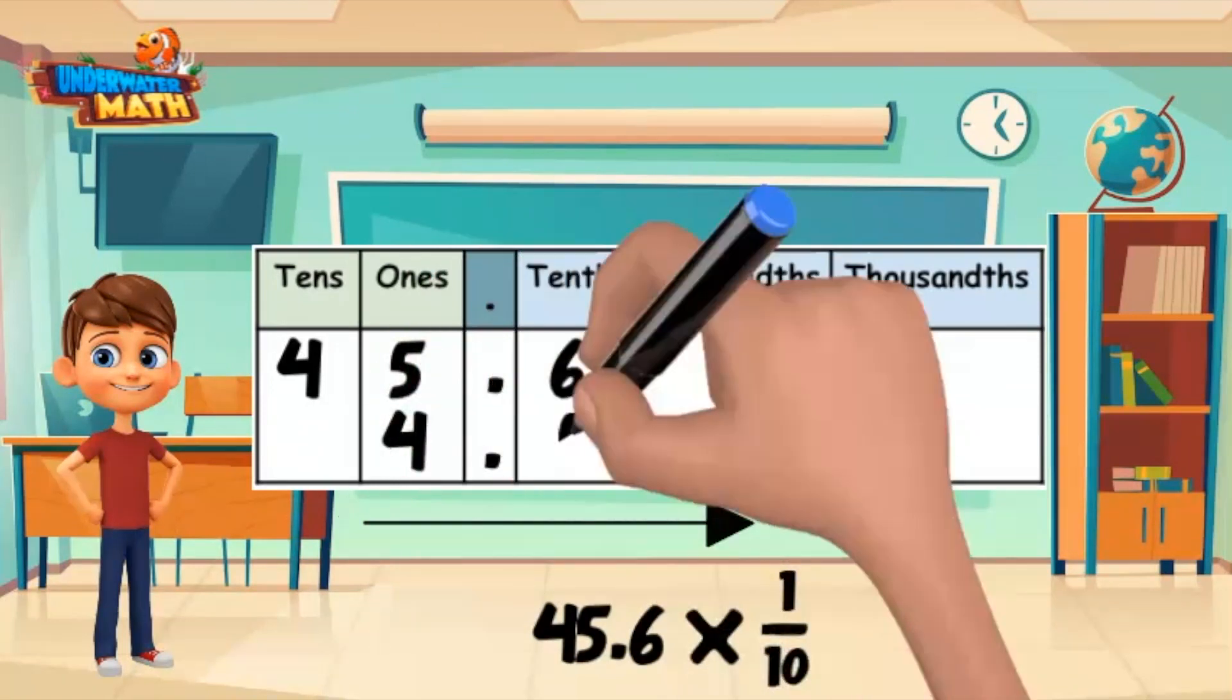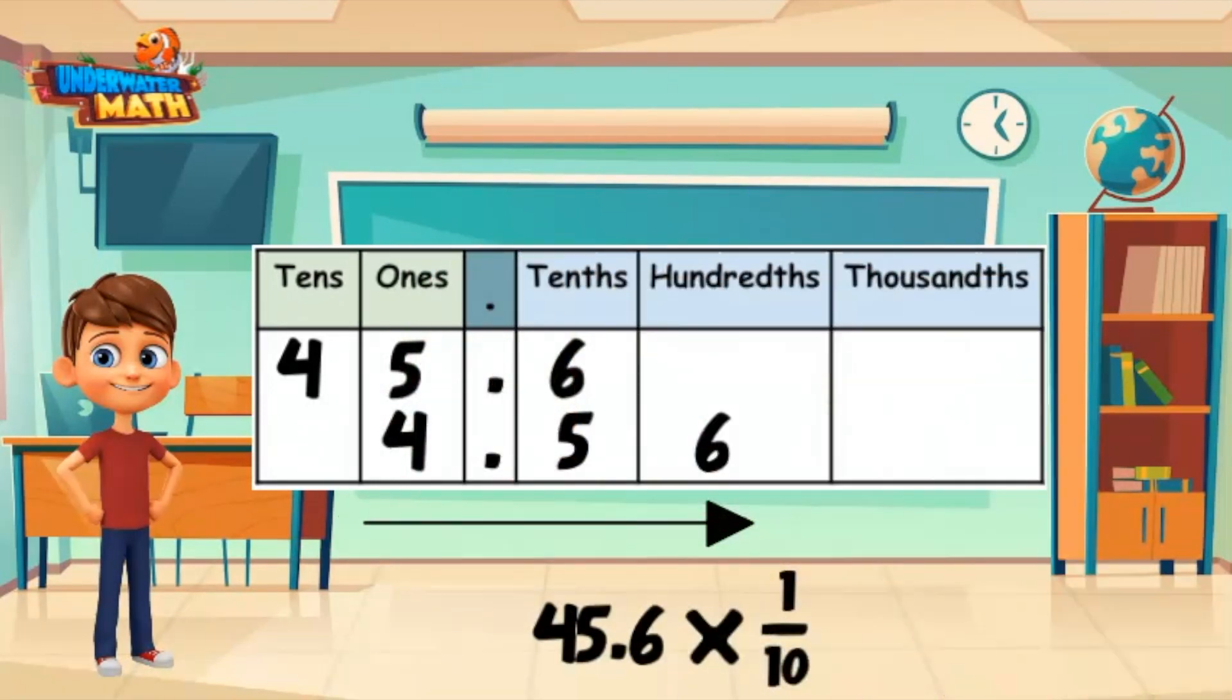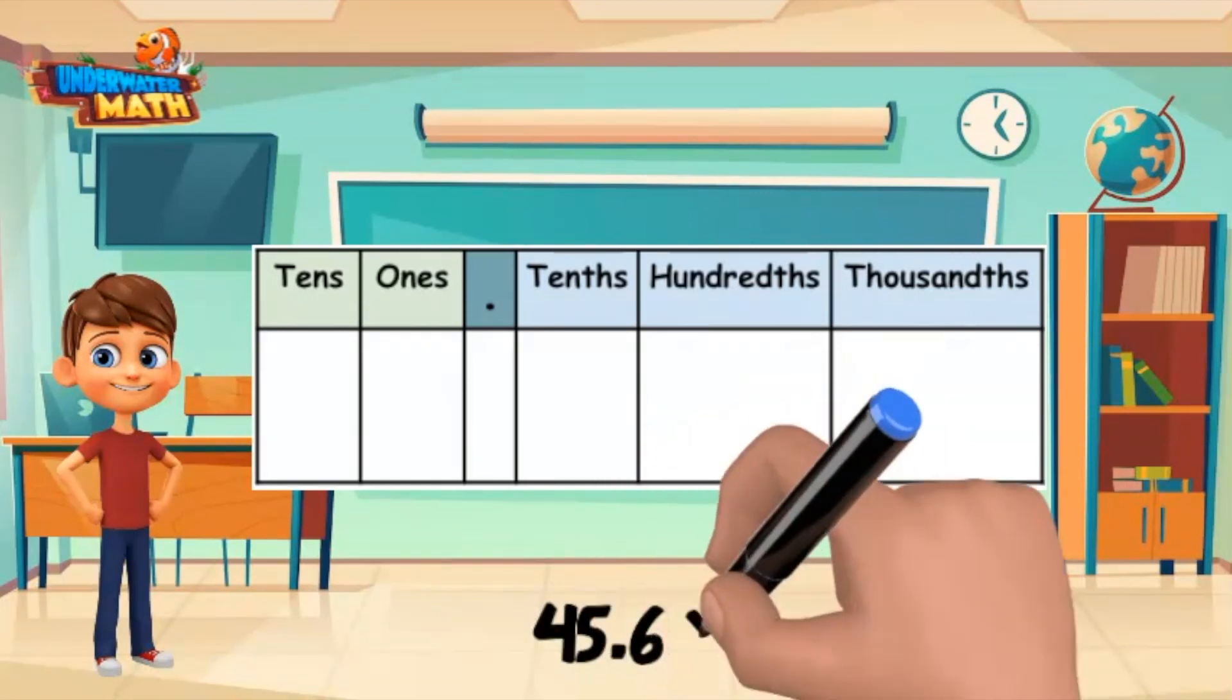If we shift all of our digits one place value to the right, we get the number 4.56. If we want to multiply by one-hundredth, we can shift our digits two place values.